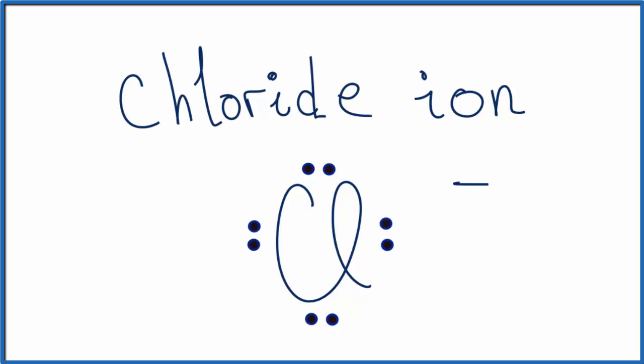So that's the Lewis structure for the chloride ion, Cl-. We should however put brackets around it because this is the general accepted notation.